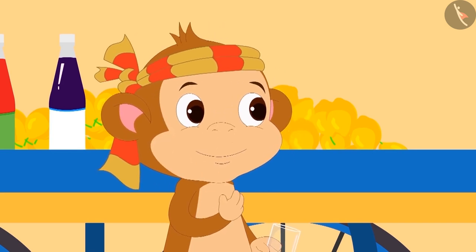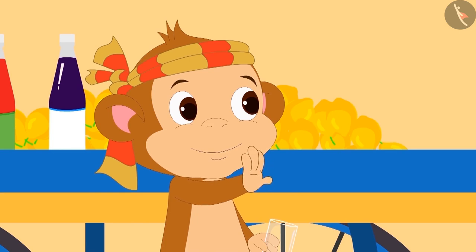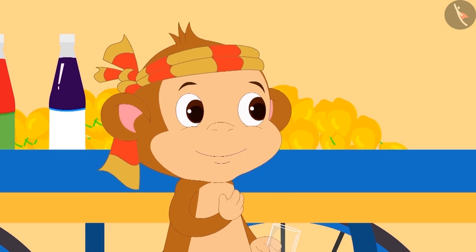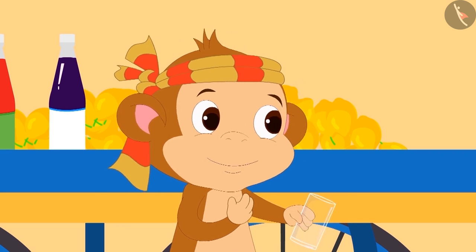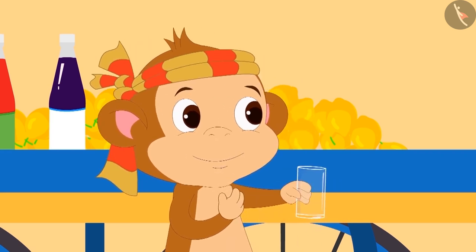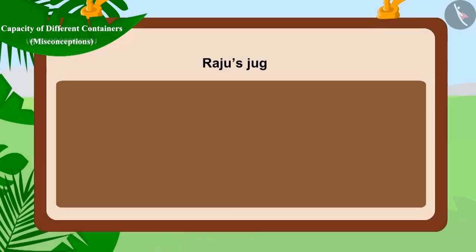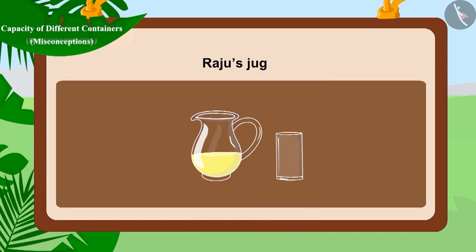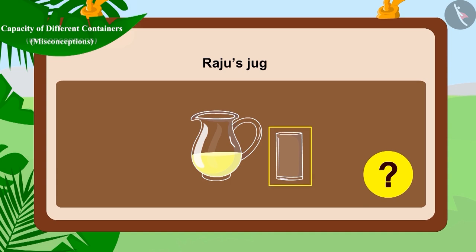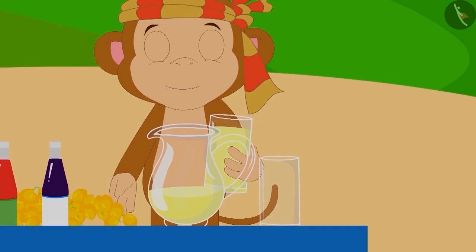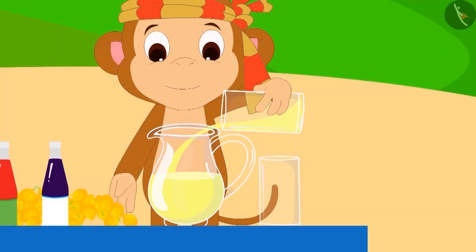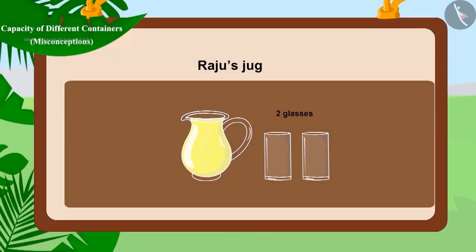Babban is very smart — he made a plan. He told Raju and Pinky that he would completely fill both their jugs. He started filling Raju's jug first. Can you guess how many glasses of lemonade are needed to fill Raju's jug? That's right — Raju's jug needed two glasses of lemonade to fill.